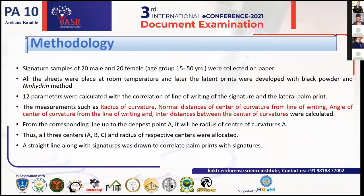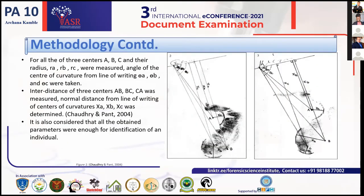The measurements of the signature that are calculated include: radius of curvature, normal distance of the center of curvature from the line of writing, angle of the center of curvature from the line of writing, and the inter-distance between the centers of curvature. Here is an image of the lateral palm print developed by the powder method, with the signature visible. Just below the signature, a line is drawn called the line of writing, and on the basis of this line, all parameters are calculated. The most important points in the lateral palm print are points A, B, and C — these are the centers of curvature — and according to these points, the calculations are made.